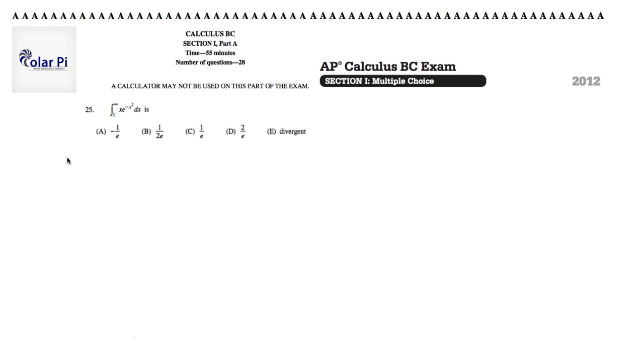Hi, welcome. In this video, I'm going to go through problem 25, and problem 25 gives us an improper integral, and so we would start by rewriting the integral as the limit as b goes to infinity of 1 to b, and then it's x e to the negative x squared dx.